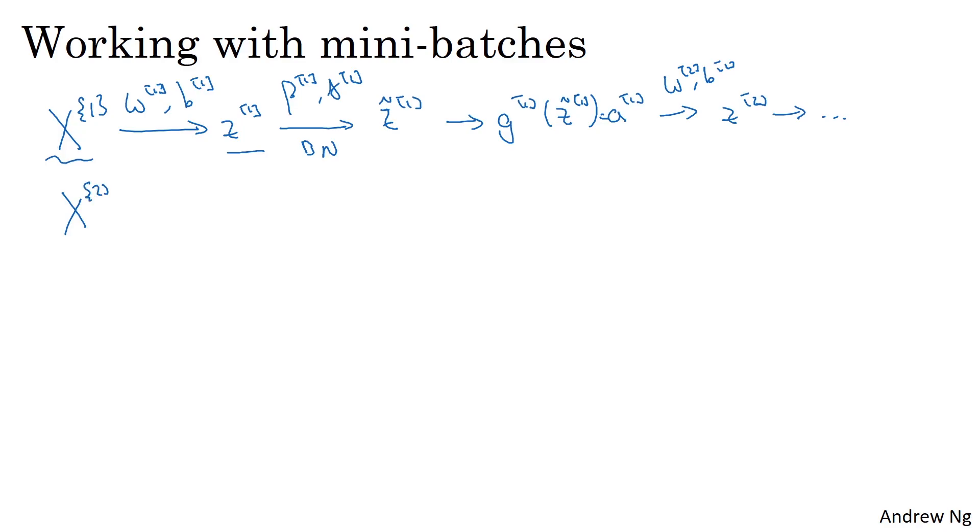Then you go to the second mini-batch, x2, and you do something similar, where you now compute z1 on the second mini-batch, and then use batch norm to compute z1 tilde. And so here in this batch norm step, you'd be normalizing z tilde using just the data in your second mini-batch. This batch norm step is looking at the examples in your second mini-batch, computing the mean and variances of the z1s on just that mini-batch, and then rescaling by beta and gamma to get z tilde, and so on. You do this with the third mini-batch, and keep training.